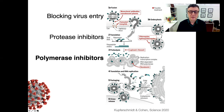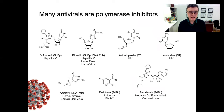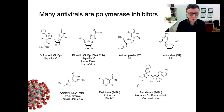We think that inhibition of the polymerase is a promising way forward because when you look into the past there are many antivirals in use to treat patients that are polymerase inhibitors — inhibitors of polymerases of other viruses such as hepatitis C, HIV, or herpes viruses.